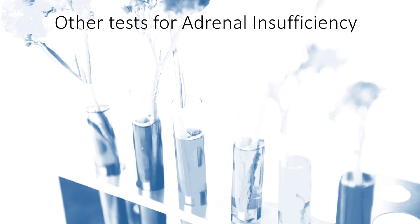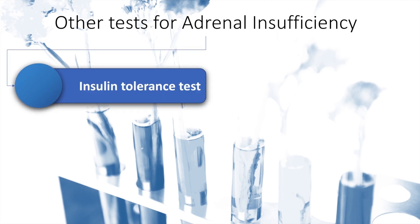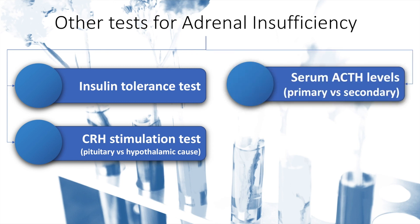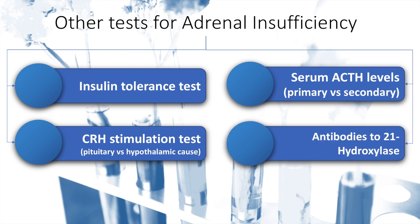Other tests for adrenal insufficiency include the insulin tolerance test, the corticotropin releasing hormone stimulation test — which is done to differentiate between a pituitary and a hypothalamic cause — and a serum ACTH level. Serum ACTH levels will be high in primary adrenal insufficiency and low in secondary adrenal insufficiency. Antibodies to 21-hydroxylase may also be used to test for the causes of adrenal insufficiency.